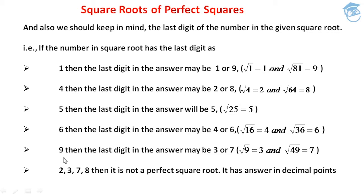If the last digit under the square root is 9, then the last digit in the answer may be 3 or 7. Because √9=3 and √49=7 — both have 9 as their last digit, and the answers are 3 and 7 respectively. So whenever we get last digit 9, the answer could end in either 3 or 7.